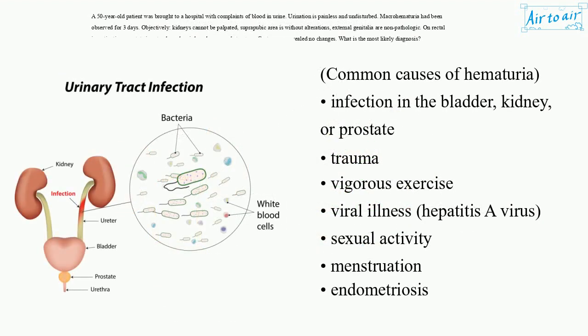Common causes of hematuria include infection in the bladder, kidney, or prostate; trauma; vigorous exercise; viral illness; hepatitis A virus; sexual activity; menstruation; and endometriosis.